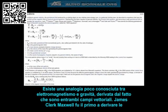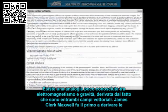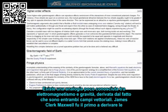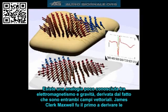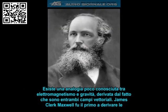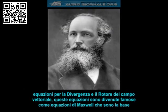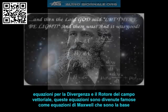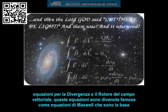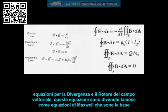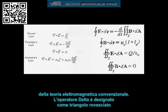There is a little-known analogy between electromagnetism and gravity, which is derived from the fact that they are both vector field functions. James Clerk Maxwell was the first to derive the equations for the divergence and curl of the vector field. These equations became famously known as Maxwell's equations, which are the foundation of conventional electromagnetic theory.